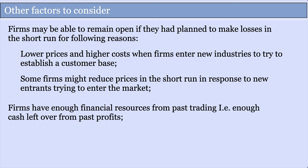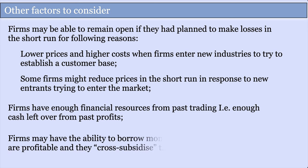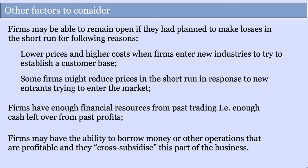This is possible if firms have enough financial resources from past profitable trading — using retained profits to cover current losses. Alternatively, firms can borrow from banks or financial institutions, raise share capital, or cross-subsidize from profitable parts of the business. These mechanisms allow firms to remain open strategically in the short or even long run, using the ideas of contribution, shutdown conditions, and cross-subsidization.